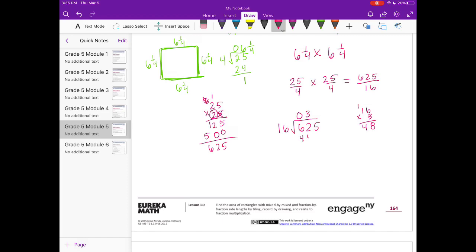16 goes into 62 three times, that's 48. Subtracting gives 14. Bring down the 5 to get 145. 16 times 9 is 144. So it goes in 9 times. 9 times 16 is 144. Subtracting, we get 1 remainder or 1 sixteenth. The area is 39 and 1 sixteenth inches squared.